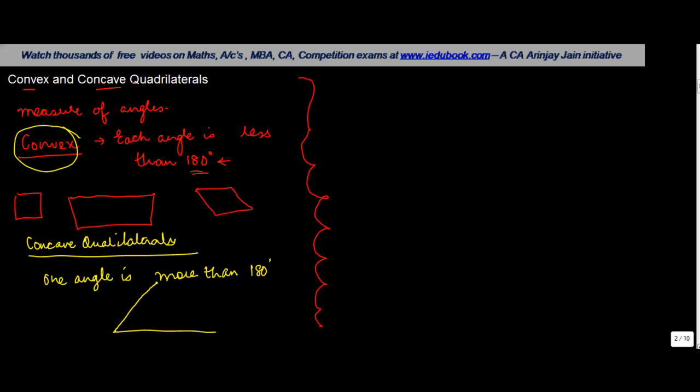Let's say, for example, you have something like this. Now this quadrilateral also has four sides - one, two, three, four. If you notice this particular angle, let's call it X degrees, is greater than 180 degrees.